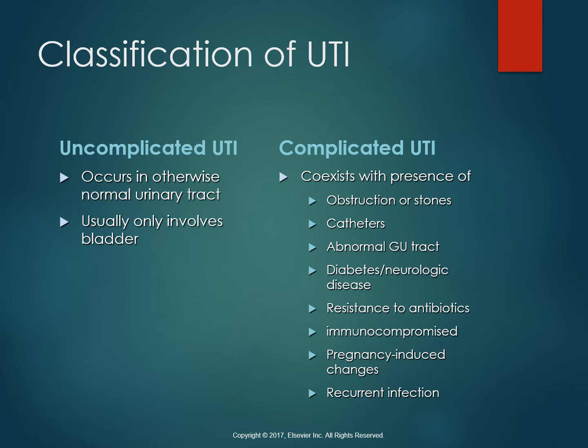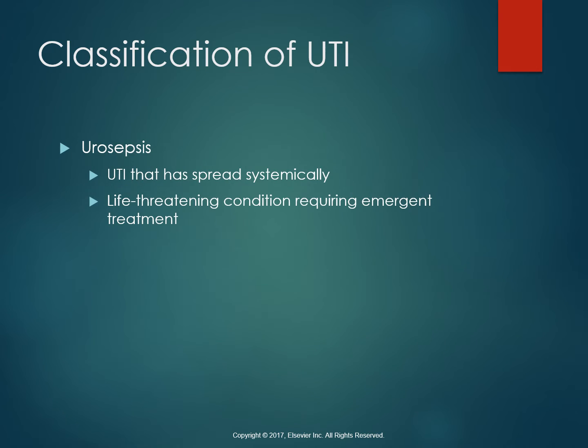The individual with a complicated infection is at risk for pyelonephritis, urosepsis, and renal damage. Urosepsis is a urinary tract infection that has spread systemically — it's gotten into the bloodstream and is causing havoc throughout the entire system. This can be life-threatening in that it causes massive vasodilation, leaky vessels, hypovolemia, and hypoxia to the tissues. We do need emergent treatment for urosepsis.